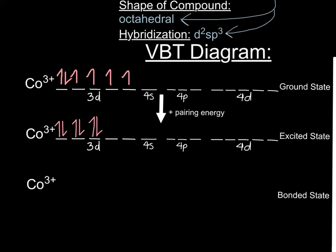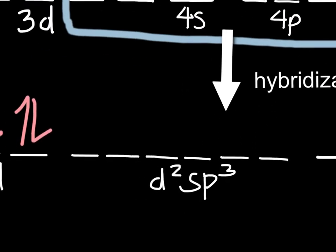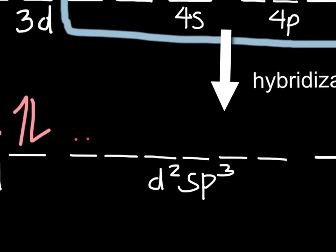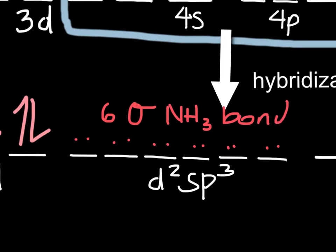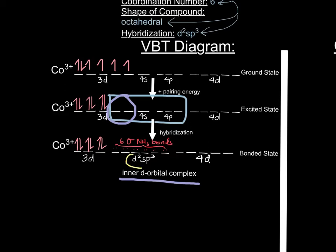With this being said, we can hybridize it in the bonded state. Through the process of hybridization from the excited state to the bonded state, we can bring down the six paired electrons in the 3D orbital and show that there are six sigma-NH₃ bonds in the d2sp3 orbital. Through the valence bond theory diagram, we can also claim an inner d orbital complex, as we had taken two spots from the 3D orbital. Therefore, the hybridization is d2sp3, which was also determined by the shape of the compound.